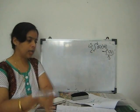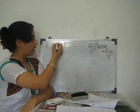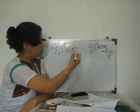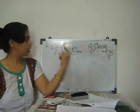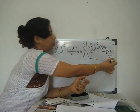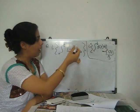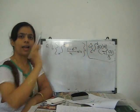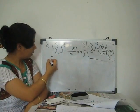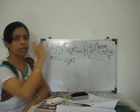Example: find the Laplace transform of ∫₀ᵗ (1 − e^(−u))/u du. Since the limit is 0 to t, we use the integral property. Step 1: identify f(t) = (1 − e^(−t))/t, then find F̄(s), and divide by s.